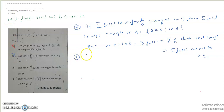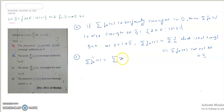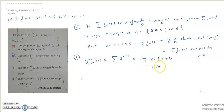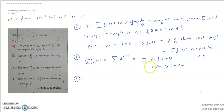Option C: the series Σfn(z) converges for each z in D. We have Σfn(z) = Σ(z^n / n), and differentiating gives Σz^(n−1) = 1/(1−z). So the series converges for every z in D. This means option C is true — the series Σfn(z) is uniformly convergent on D.